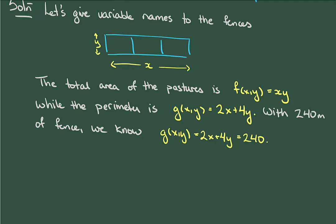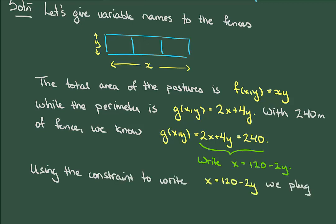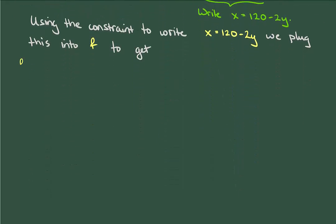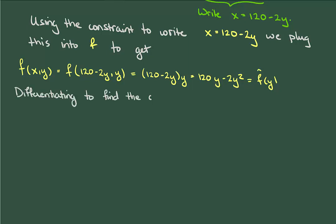According to our technique, we want to use this to write f as a function of just one variable. I'm going to solve the constraint for x and so writing x equals 120 minus 2y and substituting that into the area function f, we get the following. This is now just a function of y, which I'm going to give the name f hat because it's technically different from f. We now find the maximum of f hat using our usual technique.